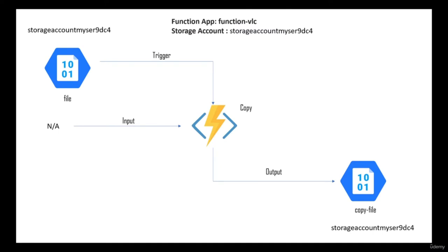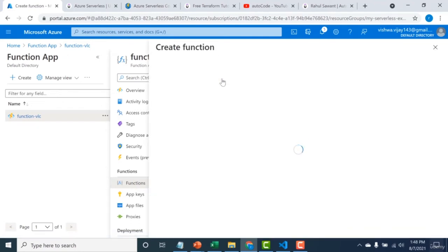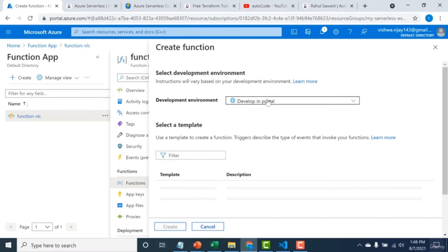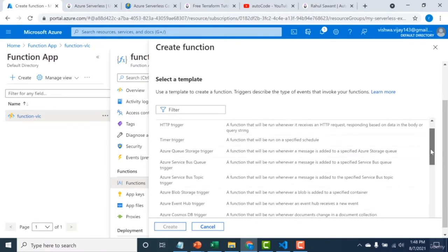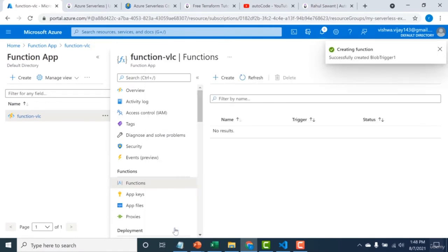Let's create a simple application where a file uploaded to blob storage triggers an Azure function that creates a copy of that input file and stores it in another container. The trigger here is a blob storage, and the output is also a blob storage file — there is no input binding. Go to your function app, create a new function, and select the Blob Storage Trigger.